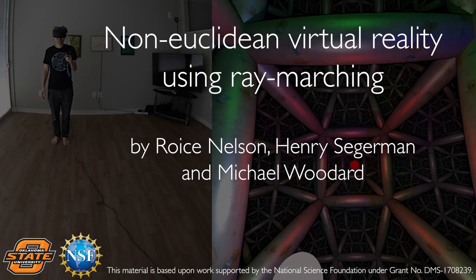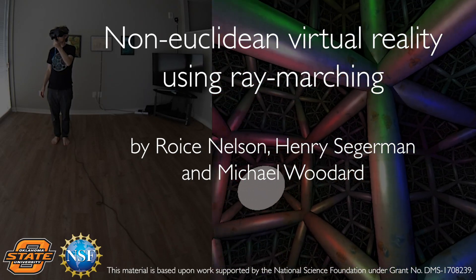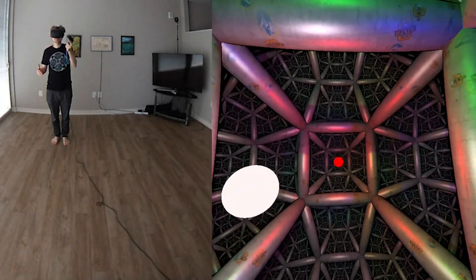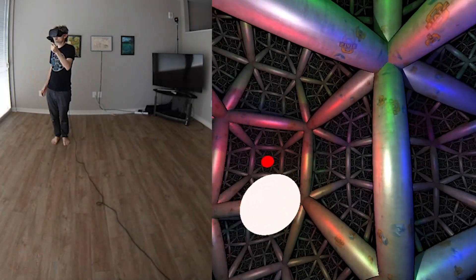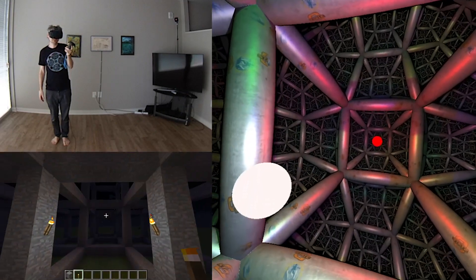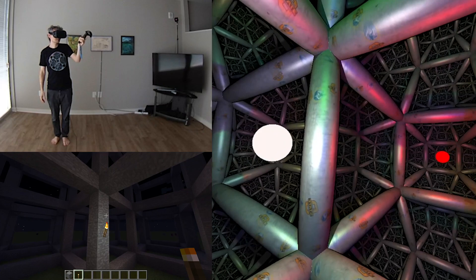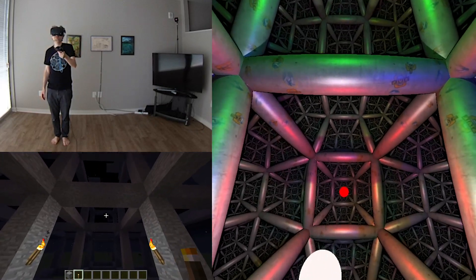Hi, I'm Henry Segerman. This is non-Euclidean virtual reality using ray marching. So I'm in a virtual space full of cubes, just like the world in Minecraft is made out of cubes, but unlike the flat Euclidean world of Minecraft, this is a negatively curved space.